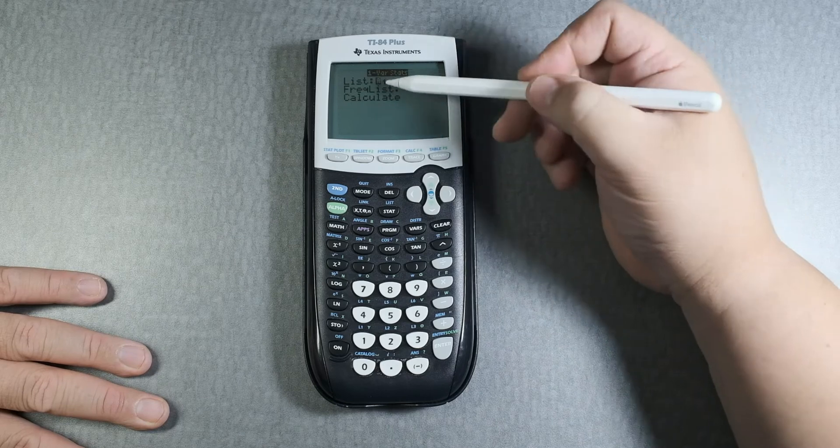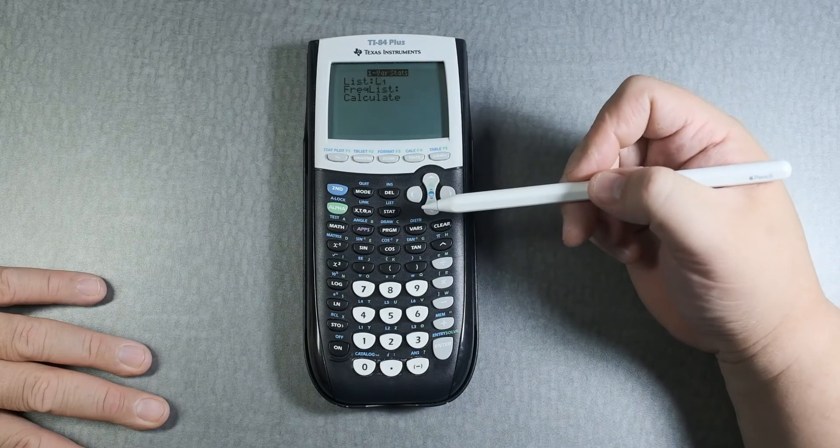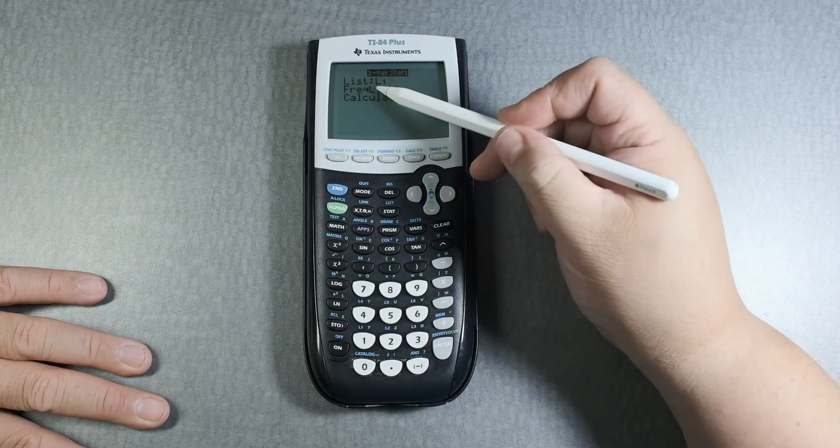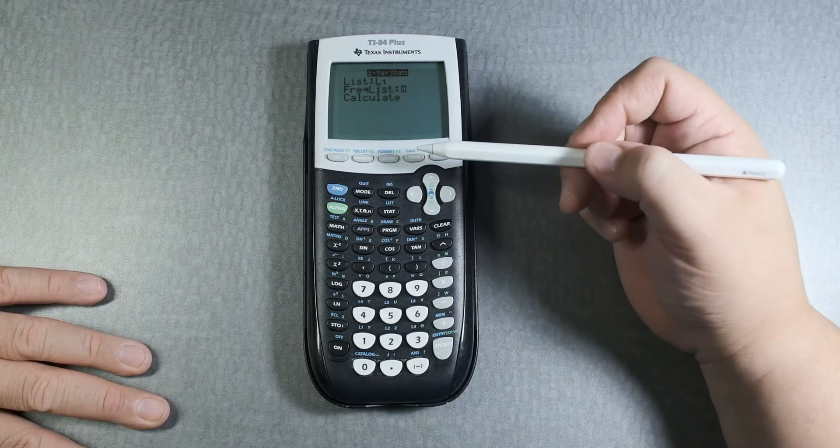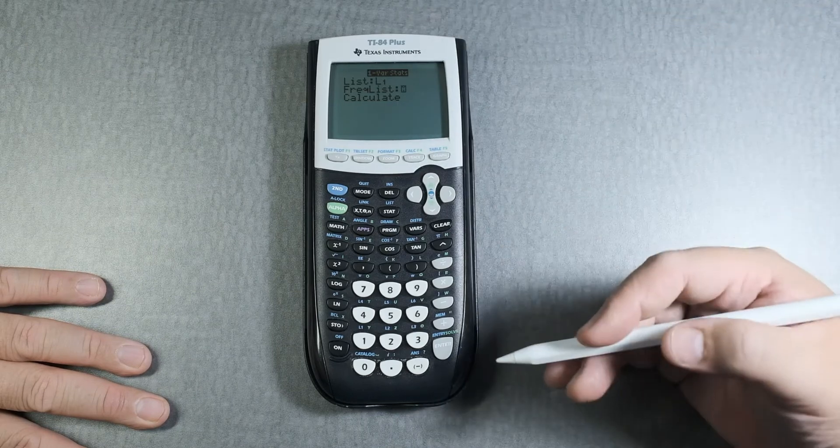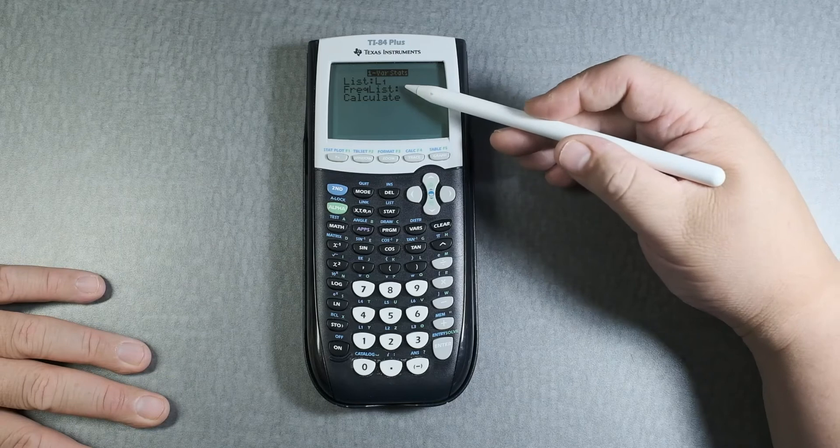Now it says what list do you want to use, one. And then it says is there a frequency, a list for that particular list or frequency for that list. I'm leaving blank because there isn't.